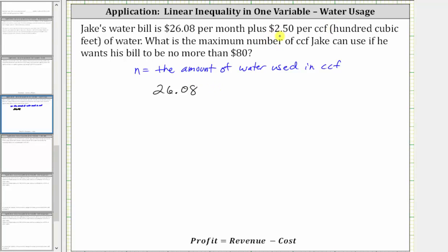The usage fee is $2.50 per CCF, which in our case would be $2.50 times N, which would be 2.5N. So we have 26.08 plus 2.5N, which gives the amount of Jake's water bill.